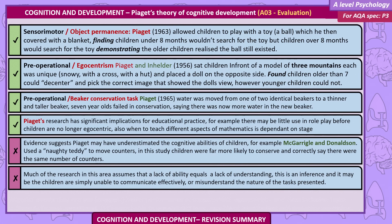Pre-operational: Egocentrism. Piaget and Inhelder (1956) sat children in front of a model of three mountains — each was unique: snowy, with a cross, and with a hut — and placed a doll on the opposite side. They found children older than seven could de-centre and pick the correct image that showed the doll's view. However, younger children could not.